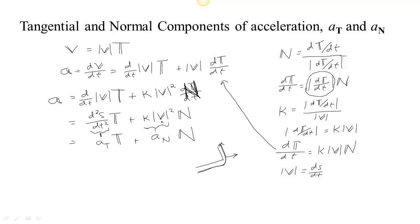Let's look at techniques for calculating a_T and a_N. Finding a_T isn't too bad: starting from your parametrization, find the velocity, find the length of the velocity (the speed), then take the derivative with respect to t. That's one derivative to get the velocity, a square root to get the speed, and then another derivative. So a_T shouldn't be too hard to get.